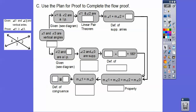It's called a flowchart proof. Now we're going to use a flowchart proof. They gave us that angles 1 and 3 are vertical angles, so we write that as the given information. Our goal is to prove that angles 1 and 3 are congruent to each other.